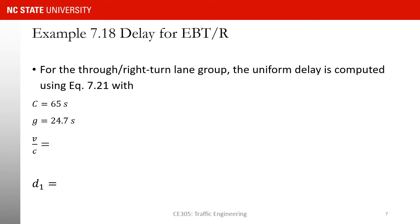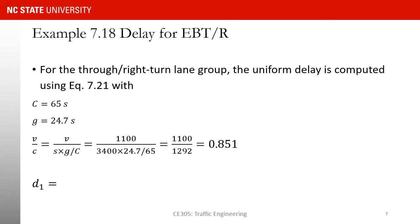Now we are going to do the same for eastbound through-right. Cycle length is the same, 65 seconds. What is going to change is G, because for eastbound through-right our G was 24.7 seconds. As a result, V over C is going to change, and D1 and D2 both are going to change. V is 1100 vehicles per hour. Saturation flow rate is also different — it's 3400. G is 24.7 divided by 65. If you work through this equation, your V over C is going to be 0.851.